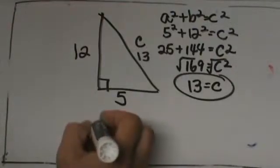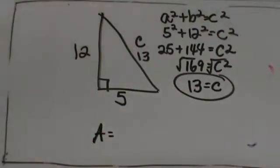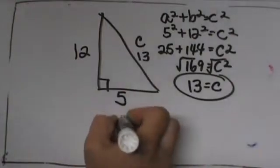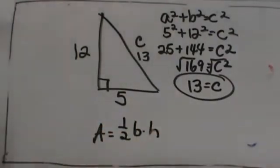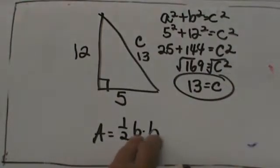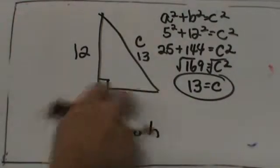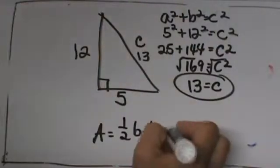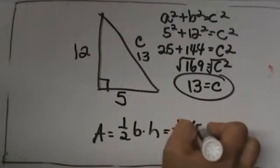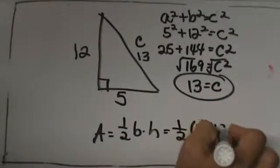We also need to find the area of the triangle. The area formula is 1 half the base times the height. The nice thing about a right triangle is the base and the height are the legs. In this case our base is 5 and our height is 12.